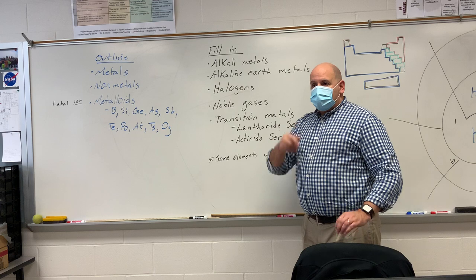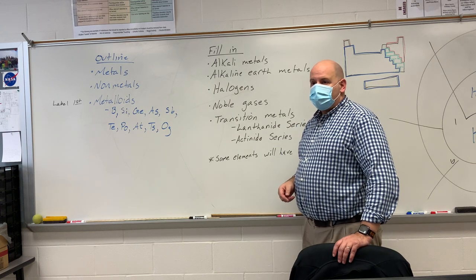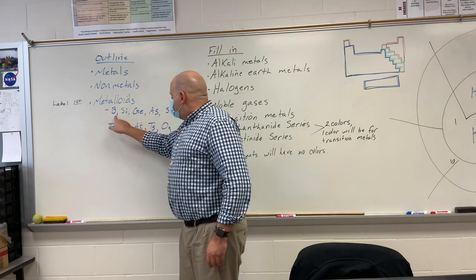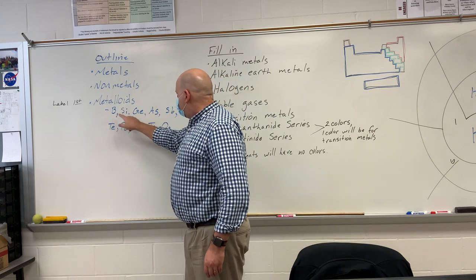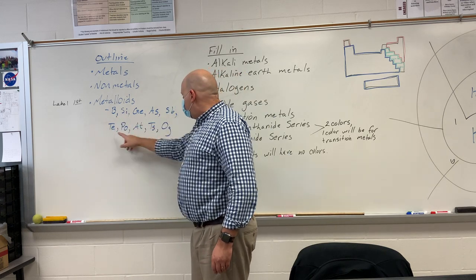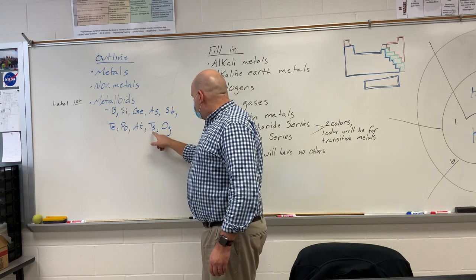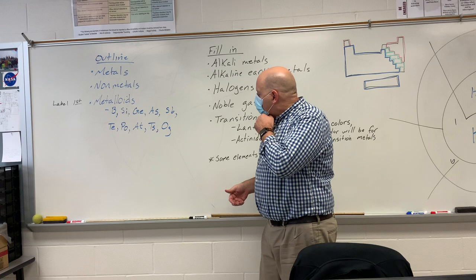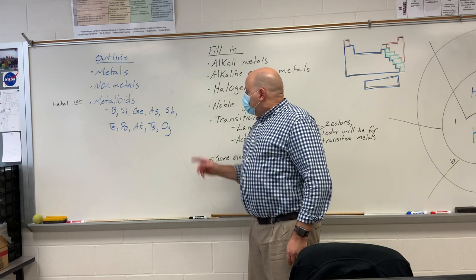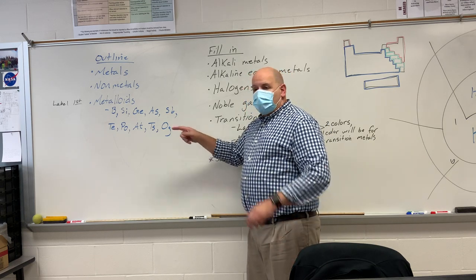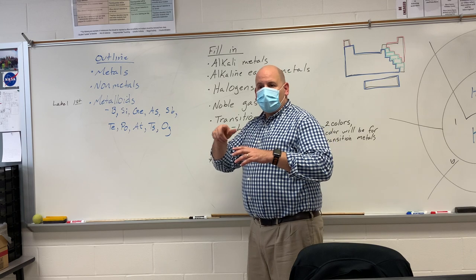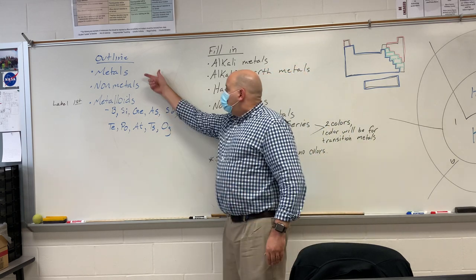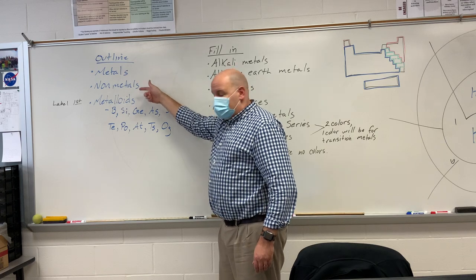After you do the outline, do we still color those the same colors as metalloids? Yes — the ones I have listed: B, Si, Ge, As, Sb, Te, Po, At, Ts, Og — just make those metalloids. Then you want to do the same thing on the spiral periodic table. Find those same elements, outline the same thing there. Do the same for metals and non-metals.